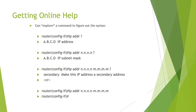Router(config-if)# ip address <network-address> <subnet-mask> ? shows: secondary (make this IP address a secondary address), and CR. This demonstrates how you can progressively explore command syntax using the '?' help system.